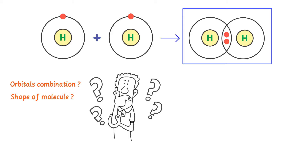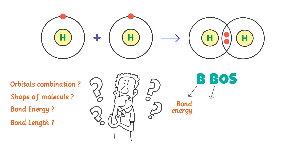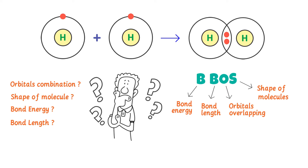What about the bond energy and bond length of a hydrogen molecule? Can you answer all these questions? To learn about bond energy, bond length, orbital overlapping, and the shape of a molecule, we look at valence bond theory, or VBT.